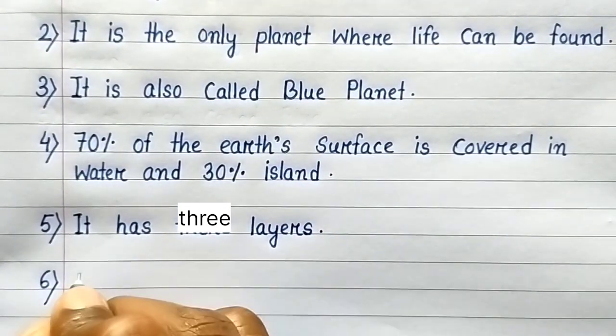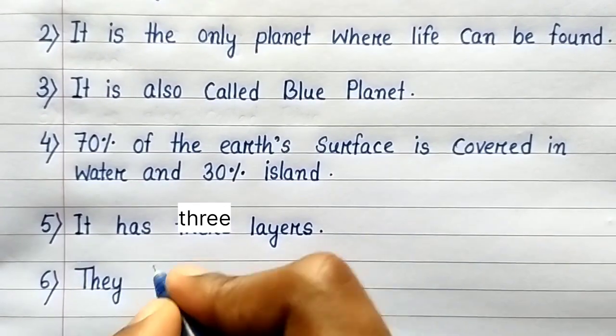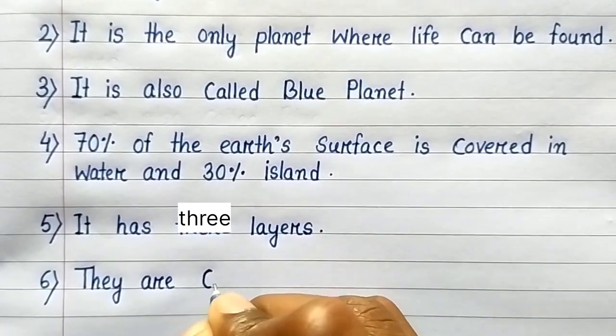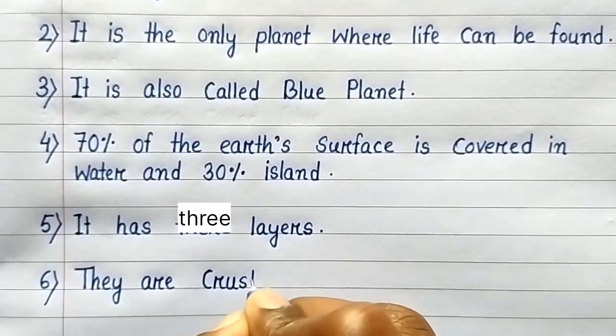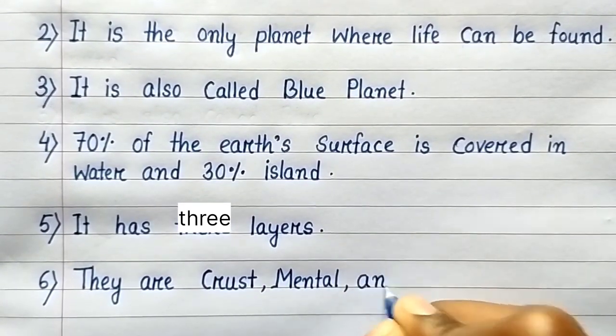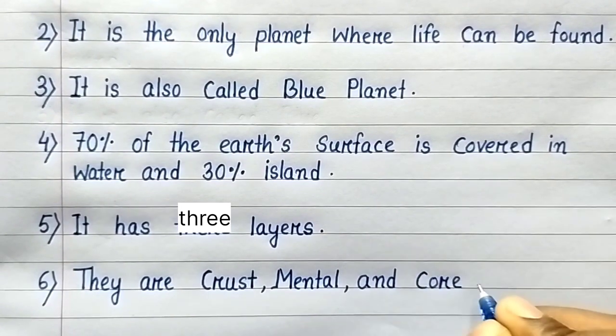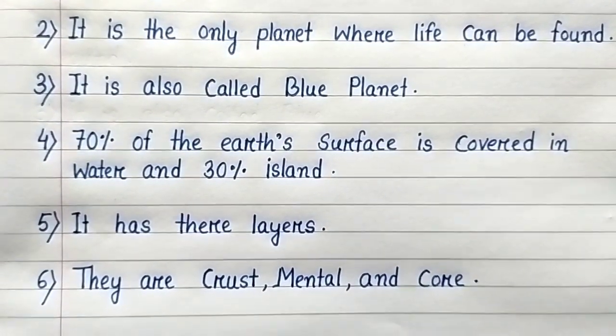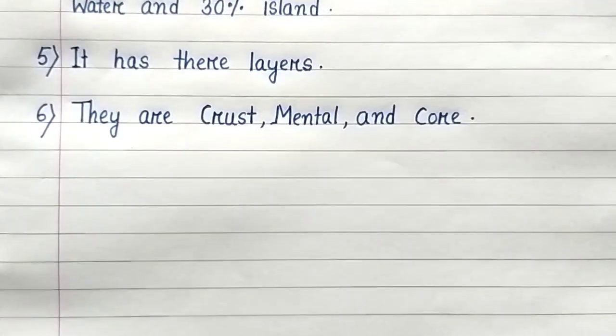Fifth line: It has three layers. Sixth line: They are crust, mantle, and core.